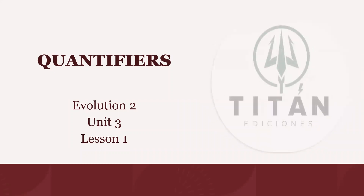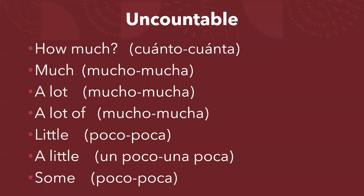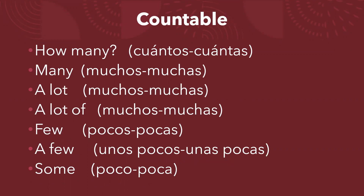What's up everybody, this is Teacher Israel from Evolution Series. Today we will talk about quantifiers. Remember that you have to do all your autonomous activities using your digital unprinted books. Quantifiers — uncountable: how much, much, a lot, a lot of, little, a little, some. Countable: how many, many, a lot, a lot of, few, a few, and some.